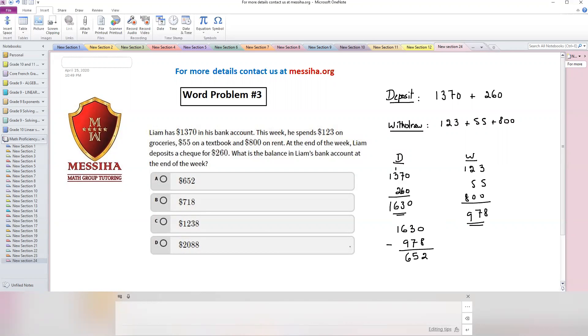So right away the first answer is going to be correct, $652. It can be the balance of Liam's bank account. So I hope you understand this one. Thank you for listening.